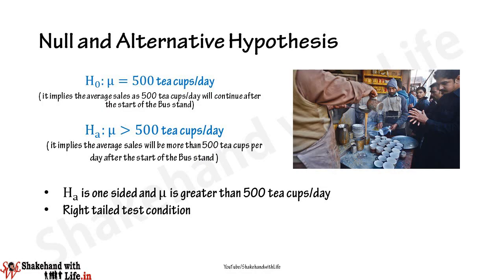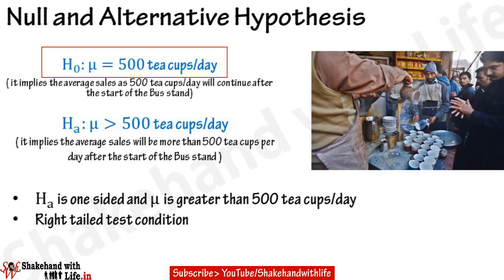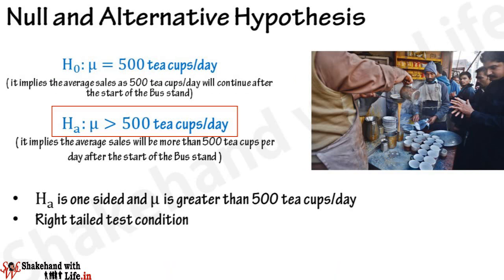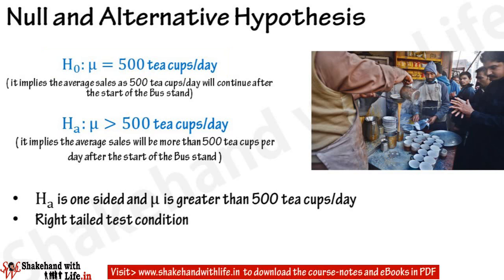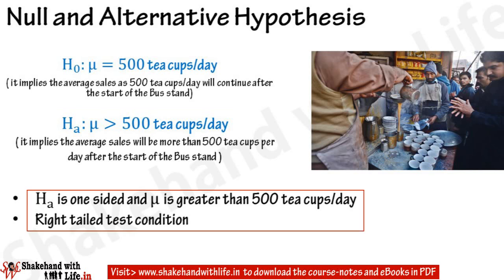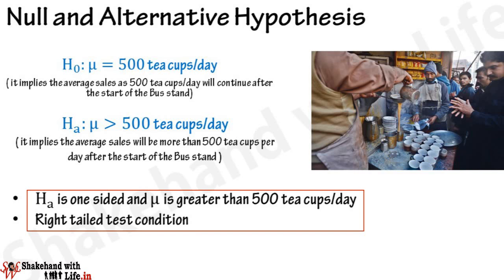State the null and alternative hypotheses: H-naught: mu equals 500 tea cups per day, implying average sales of 500 per day will continue after the start of the bus stand. H-a: mu greater than 500 tea cups per day, implying average sales will increase. Since H-a is one-sided and greater-than type, this is a right-tailed test condition.